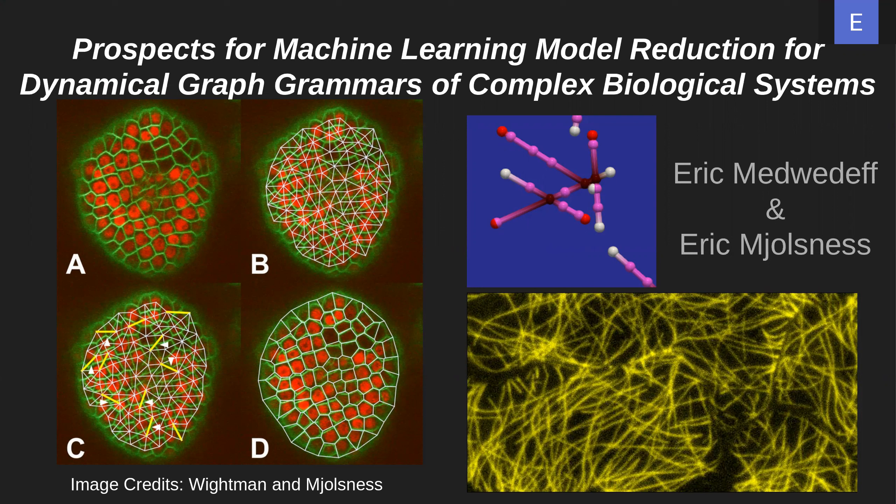The first is an example of a complex biological system. The second is an example simulation of a simplified model using dynamical graph grammars. The third is what dynamical graph grammars actually are. The fourth is how we simulate dynamical graph grammars on a computer in an efficient way. And finally, the prospect of machine learning as applications for our simulations. By the end of this presentation, I hope you'll have a better understanding of our methods to simulate biology on the computer and what prospects we have for reducing models and, in turn, reducing the computational cost and complexity.